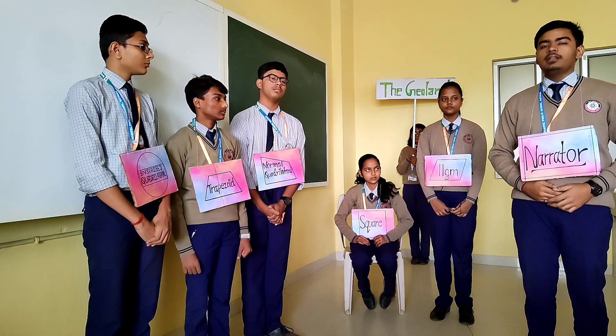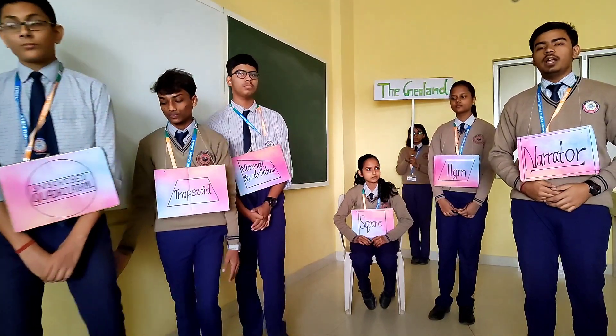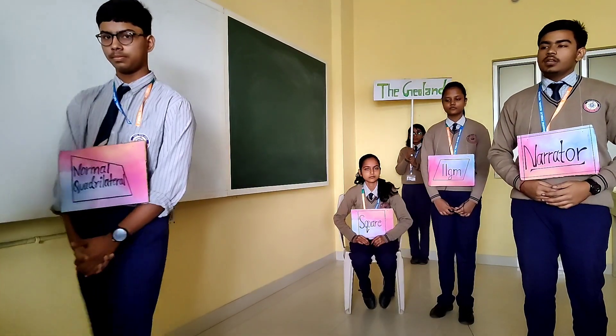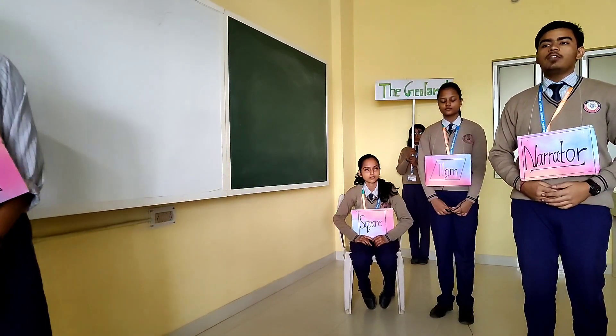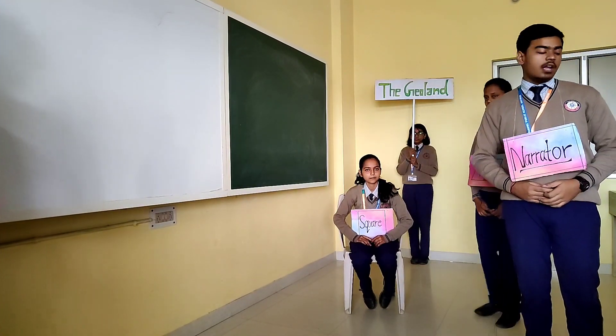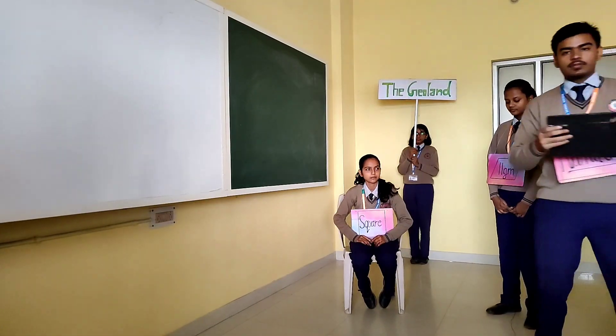Now, where the story begins. There was once a beautiful land called Jeoland. A princess with no sibling was spoiled, smart, beautiful, and was called Square.